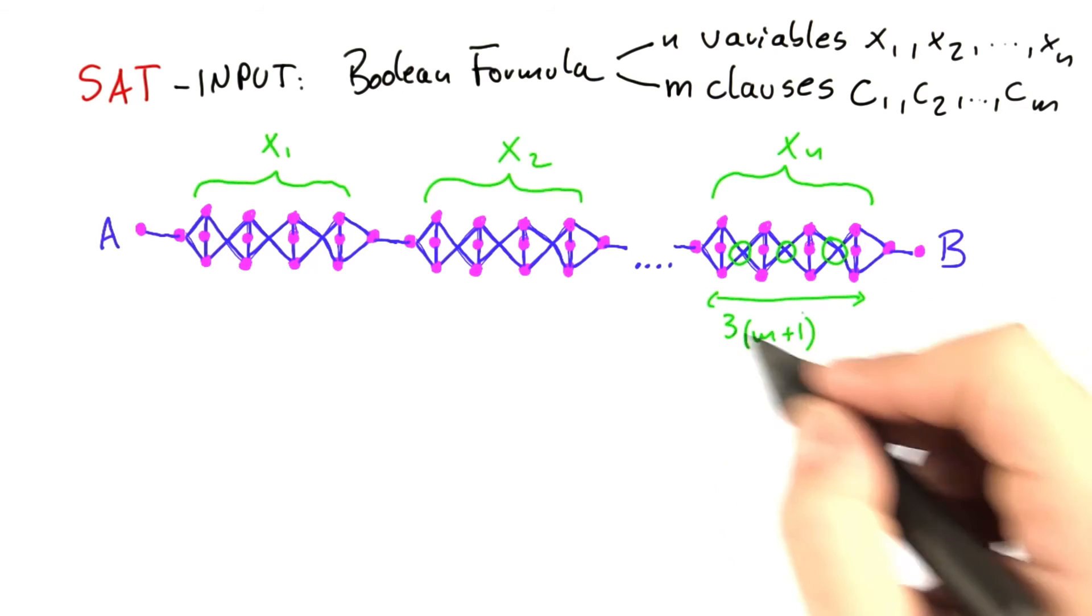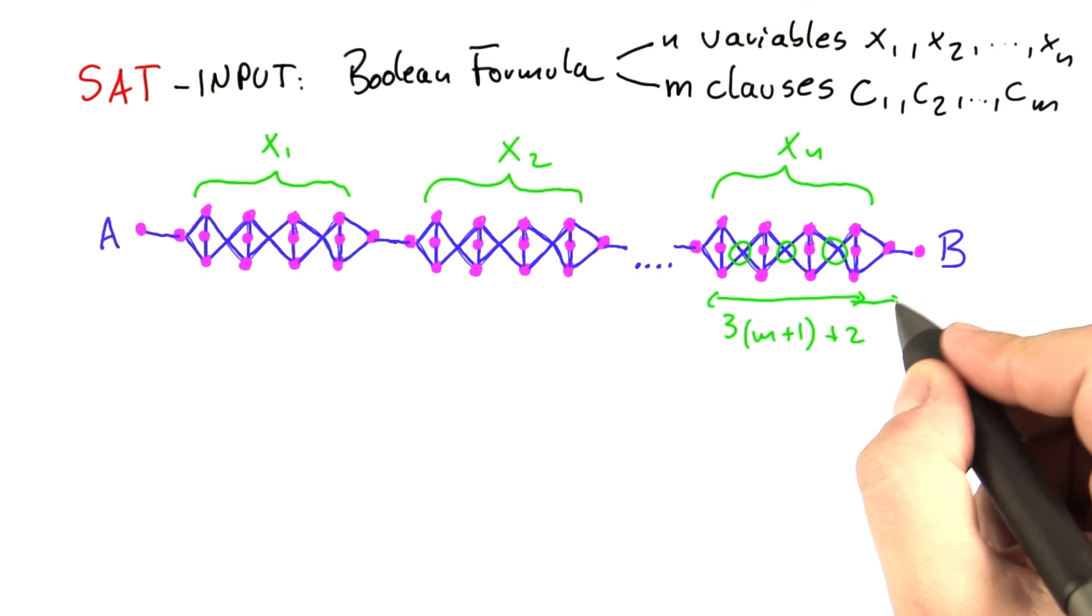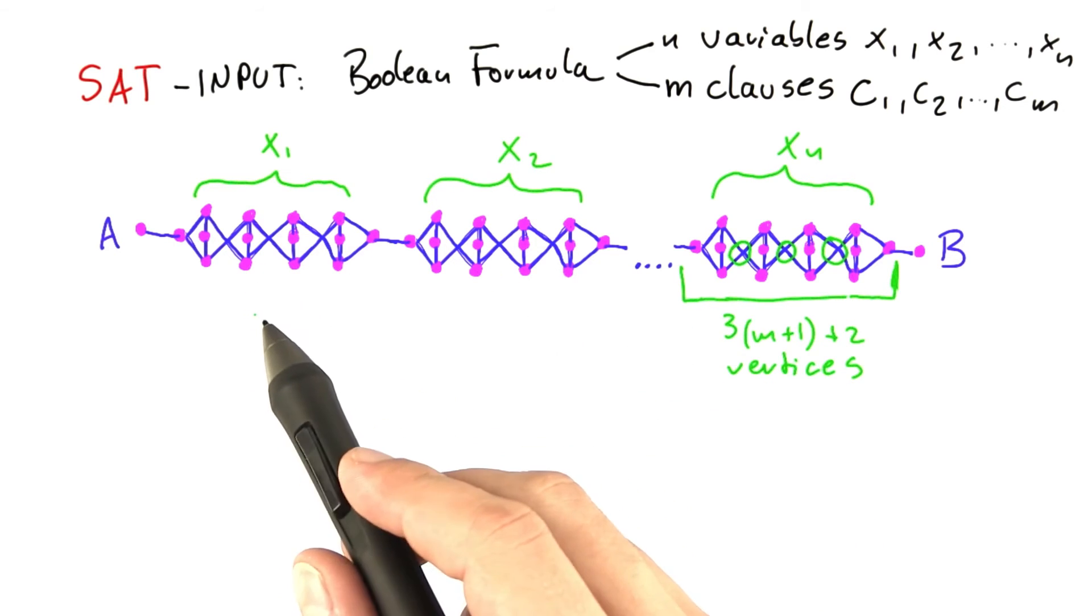And then we have one more vertex here, one more vertex here, so plus 2 if we extend it like this. And this holds true for all of the other parts here as well.